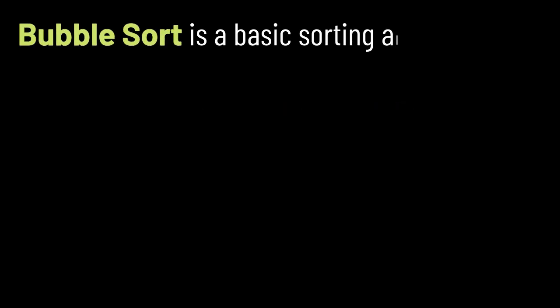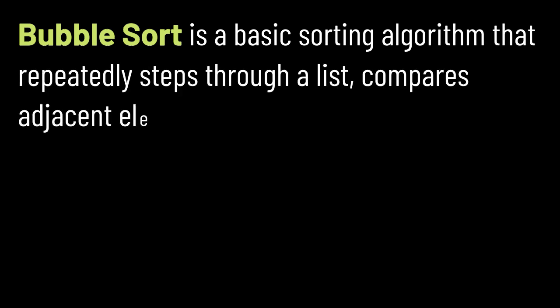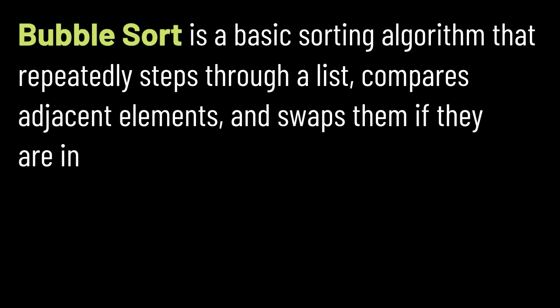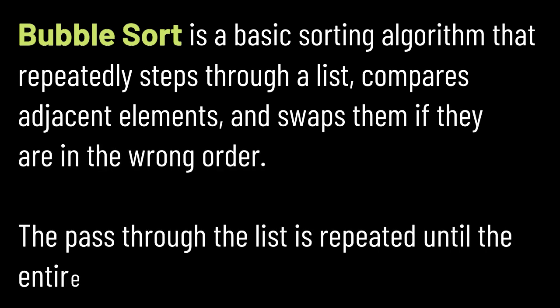Bubble Sort is a basic sorting algorithm that repeatedly steps through a list, compares adjacent elements, and swaps them if they are in the wrong order. The pass through the list is repeated until the entire list is sorted.